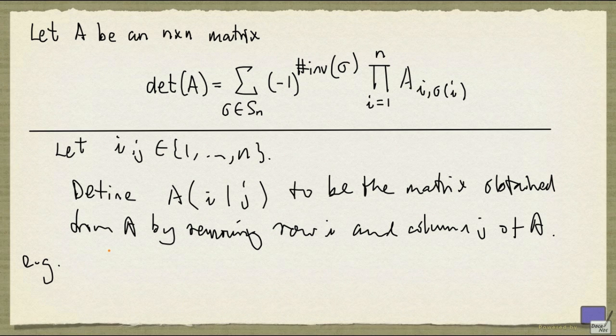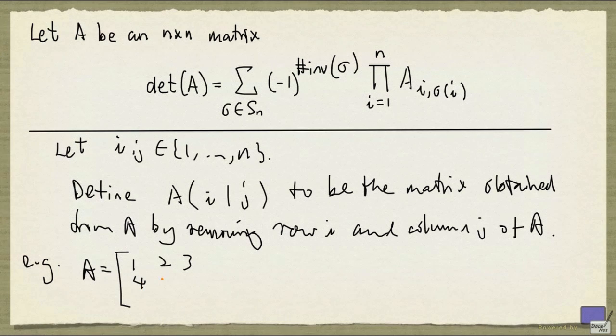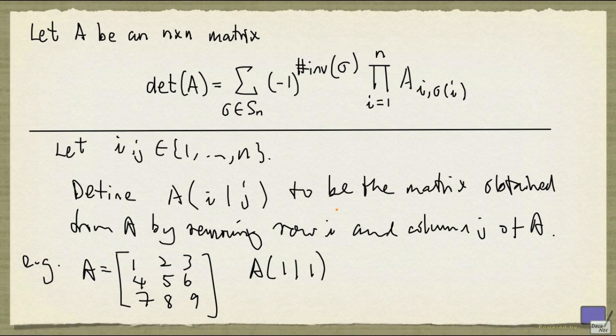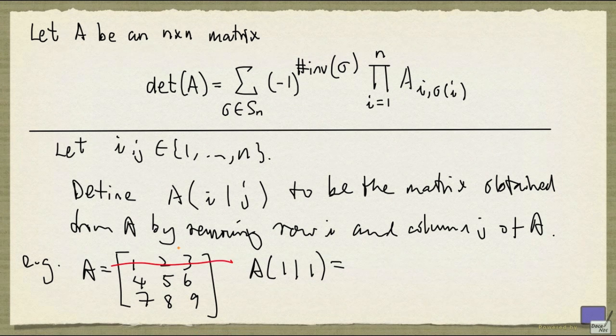So let's look at an example. Suppose that my matrix A is 1, 2, 3, 4, 5, 6, 7, 8, 9. So what would be A(1|1)? We're removing first row and first column. That leaves us with the matrix 5, 6, 8, 9.